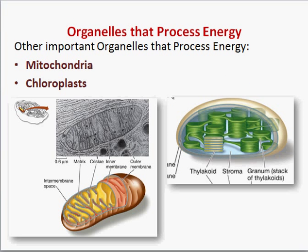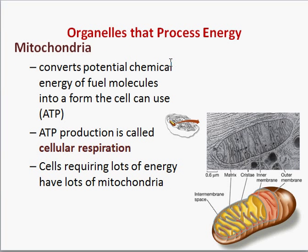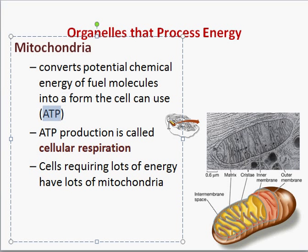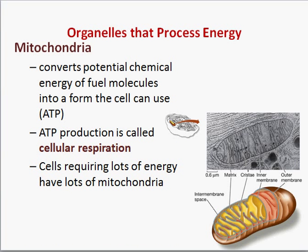The next structures we'll focus on are organelles that produce energy. There are two main ones: the mitochondria and the chloroplasts. The mitochondria takes chemical energy from food — things like sugar, specifically glucose — and transforms it into energy in the form of ATP, adenosine triphosphate. This process is called cellular respiration and occurs at the mitochondria, where the main production of ATP takes place.